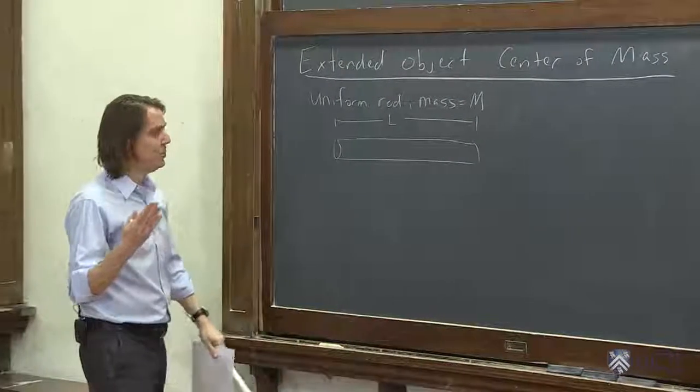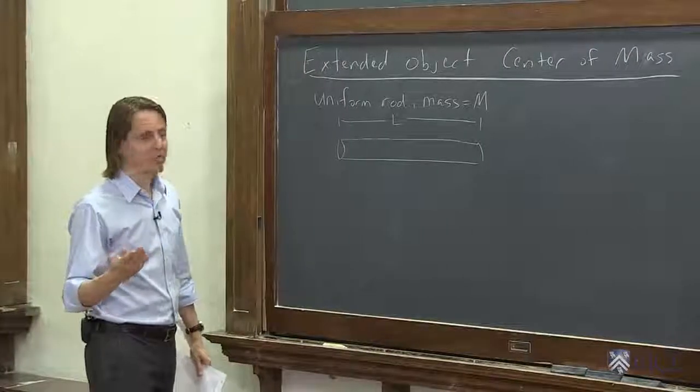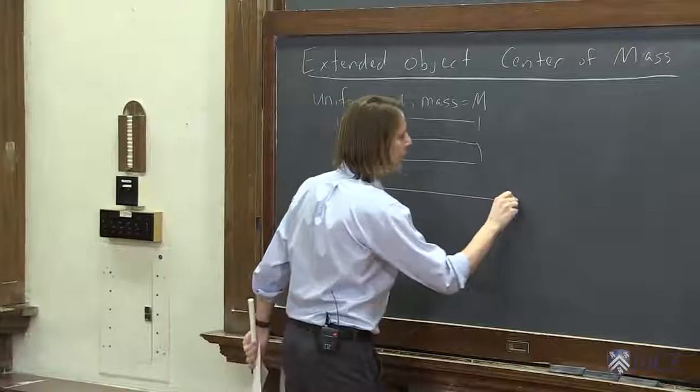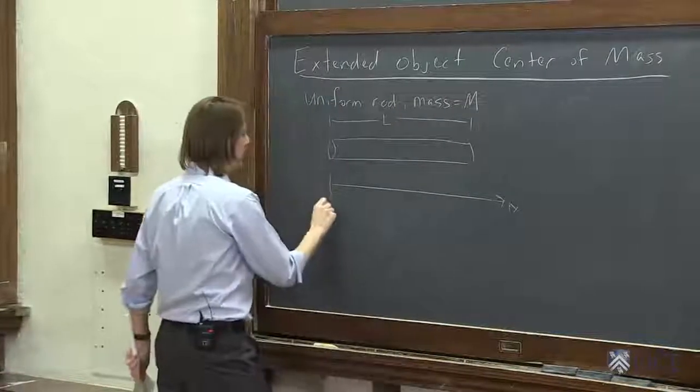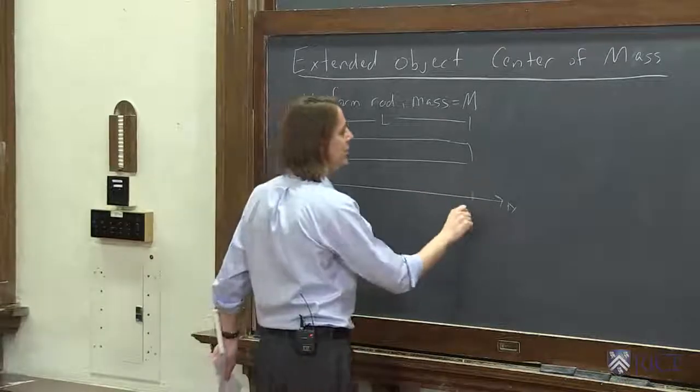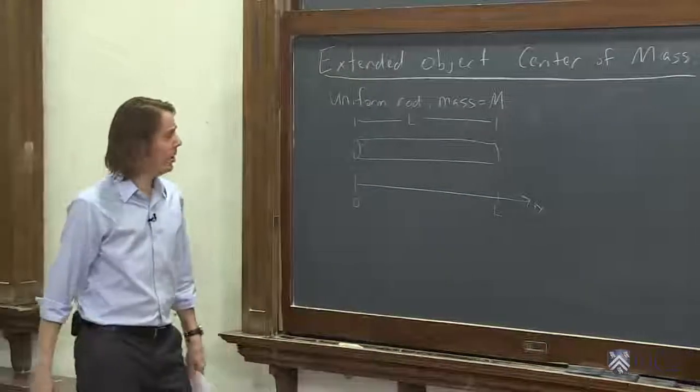So since we're finding an actual position in space, we need a coordinate system. I'm going to draw an x-axis along the length of the rod with its origin at one end of the rod, because that will make it easier. So this would be the point where x equals L at the end of the rod.